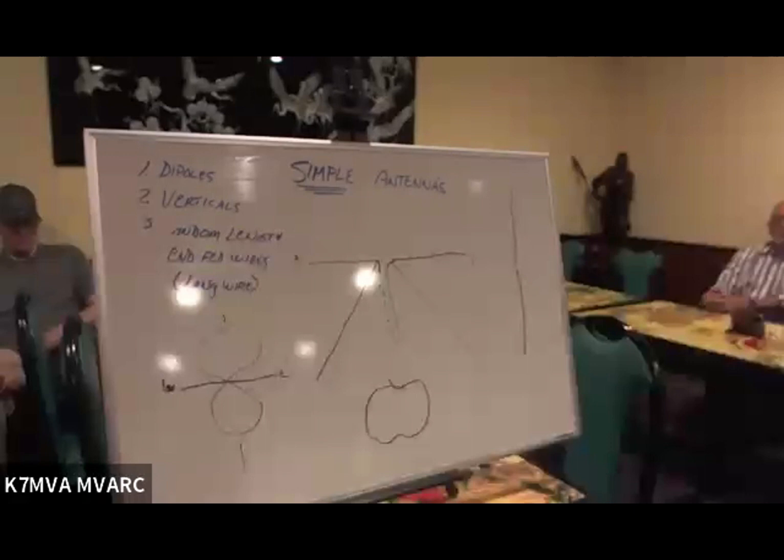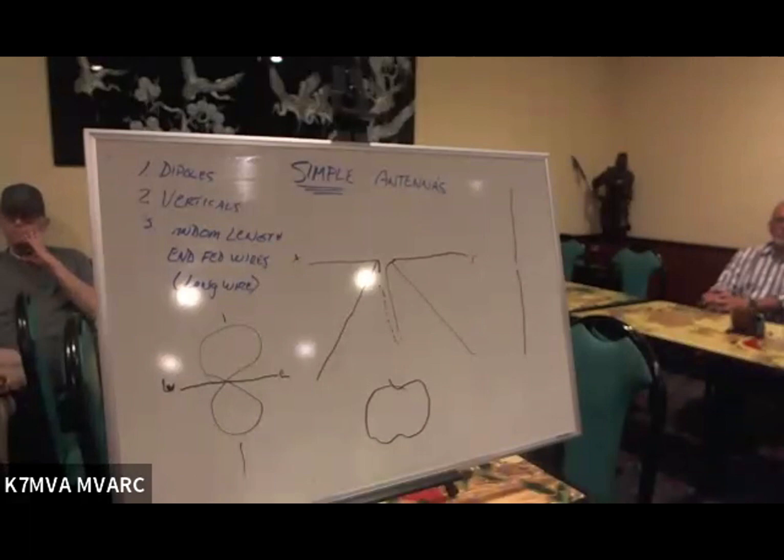I can put up an inverted V at my house and tune it, and it works like gangbusters. If I take that same antenna and take it over to Bill's house, and he hangs it at the same height in the same direction, 85% chances he's going to have to retune it because of where it's at. Buildings, fences, soil, all affect the radiation pattern of the antenna.